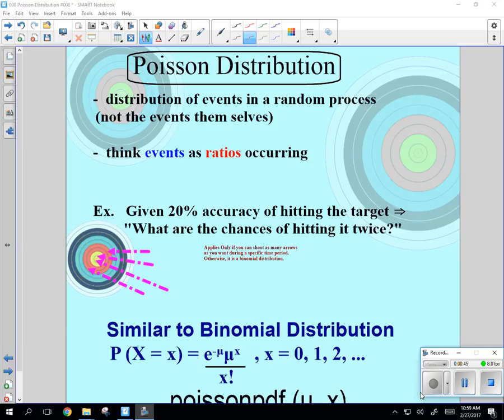When we look at things having an infinite number of n going to infinity, and when we have ratios instead of events, we're using something called Poisson. And Poisson has an E in it, so it's got some special properties.